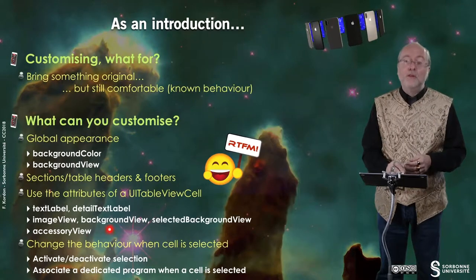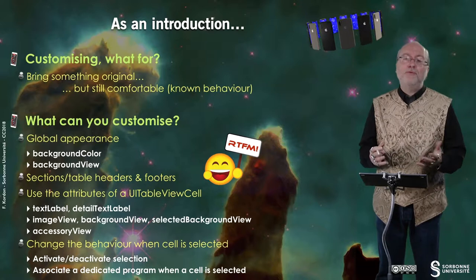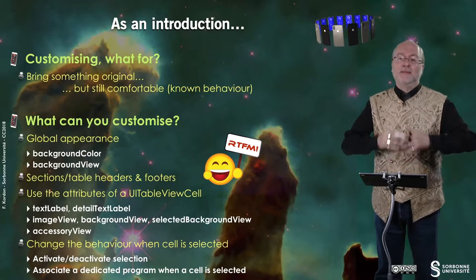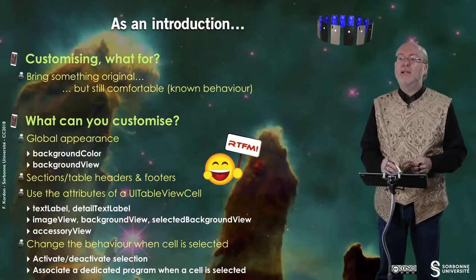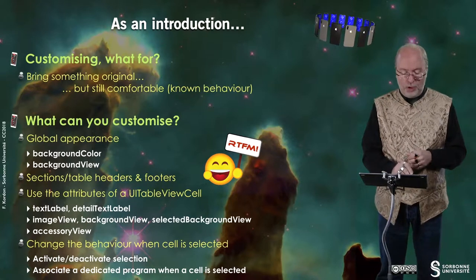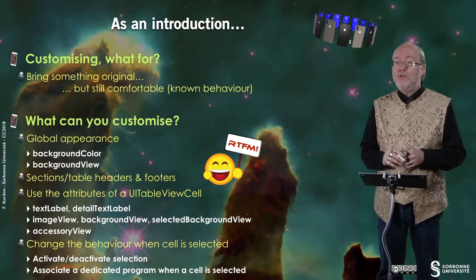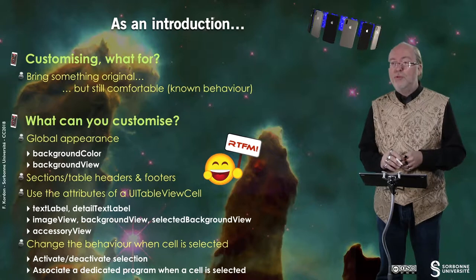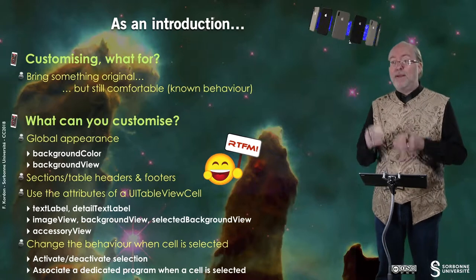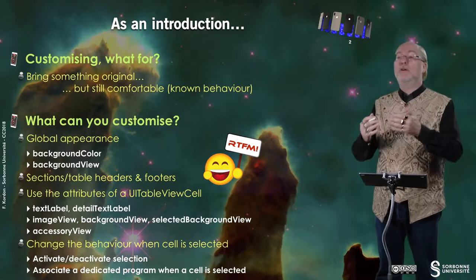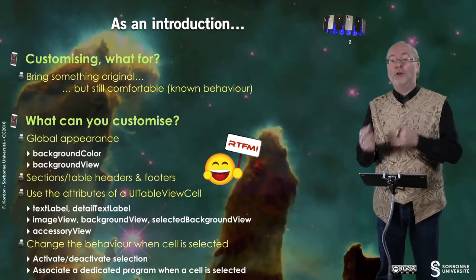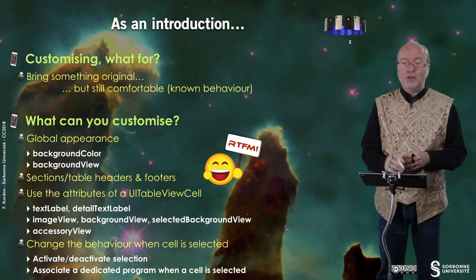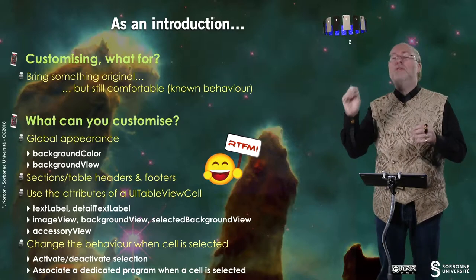A UI TableView cell embeds various information: you have a text label, a detailed text label, but you also have an image view, a background view, and a selected background view — so you can change the appearance of the cell when it is selected or not. You also have an accessory view that you can associate an action to.